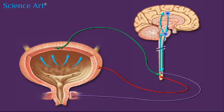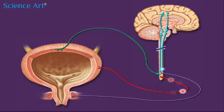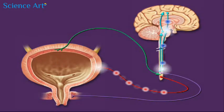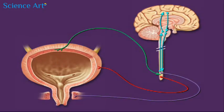When urination is desired, signals from the brain stimulate the micturition reflex. The brain also decreases action potentials in the somatic motor neurons to relax the external urinary sphincter.